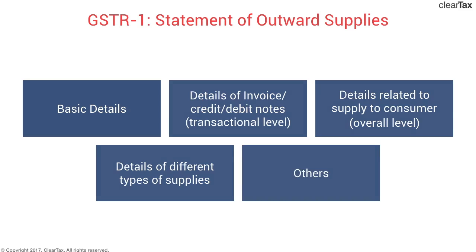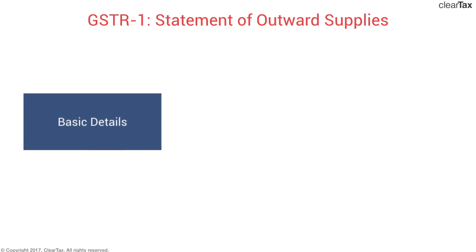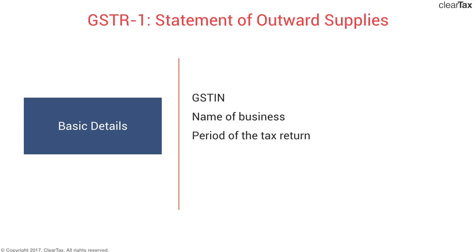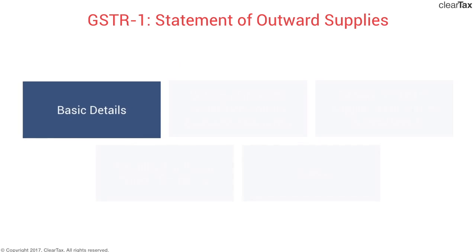The basic details that GSTR 1 requires the taxpayer to fill — and these will keep repeating in all types of returns — are: the GSTIN and the name of the business, which will be auto-populated as soon as you log in; the period of the tax return, such as September or a financial year; and the aggregate turnover in the previous financial year, which is a special requirement of GSTR 1. The first three are common across all returns.